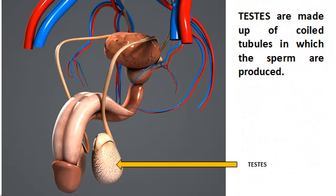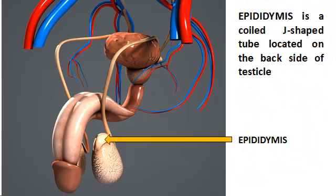The testes are made of coiled tubules in which the sperm are produced. They produce the male sex hormones called testosterone for the production of sperm. The epididymis is a coiled G-shaped tube located on the back of the testicle. It stores the sperm for 2 to 4 days after they have been produced.